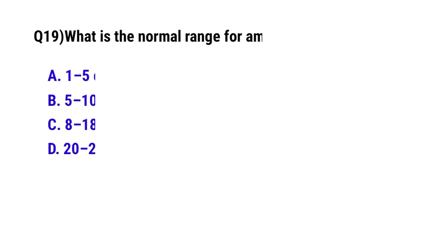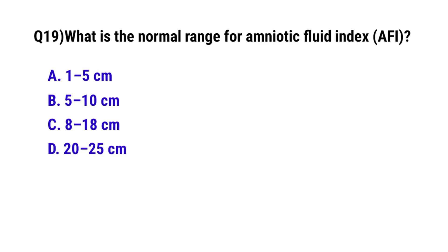Question No. 19: What is the normal range of amniotic fluid index? The correct option is C: 8 to 18 centimetres.